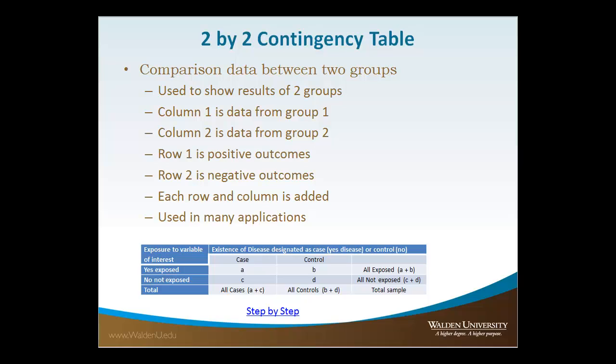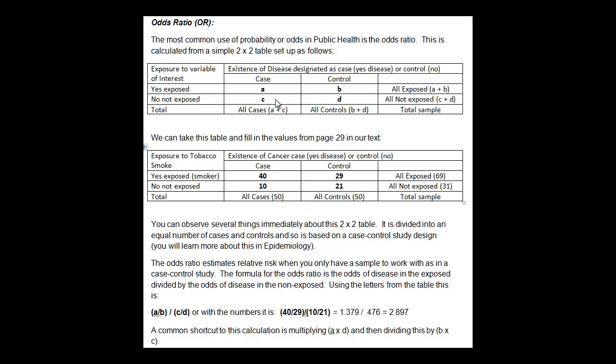Two-by-two contingency tables are used to compare data between two groups. Column 1 is data from group 1 and column 2 is the data from group 2. Row 1 are the positive outcomes, while row 2 are the negative outcomes. You add up the sums of each of the rows and columns to perform your calculations. From the week 3 step-by-step guide, the exposed cases are A, the exposed controls are B, the non-exposed cases are C, and the non-exposed controls are D.